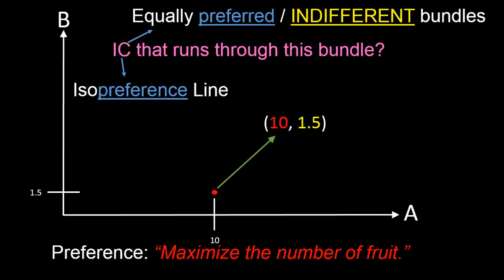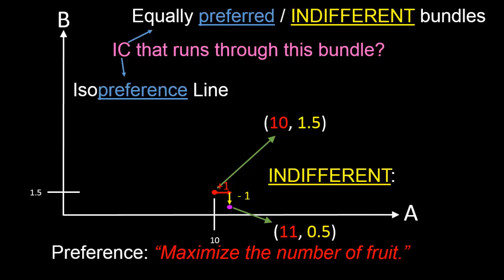Let us now consider an example of a bundle that lies on the same indifference curve. Suppose we started off at the red bundle, gave Chris one additional apple but took away from him one banana. Then he will land on the purple bundle — 11 apples and 0.5 banana. Since all Chris cares about is his total number of fruit, it must be the case that he is equally happy being on the red bundle or on the purple bundle. So in other words, he is indifferent between them, and hence the purple bundle is going to be on the same indifference curve as the red bundle.